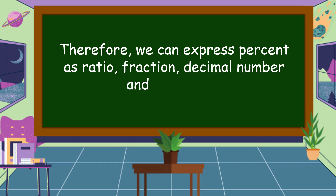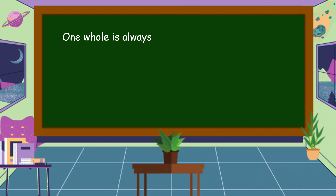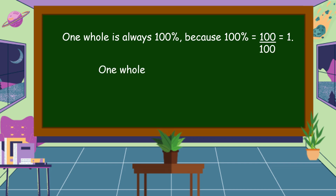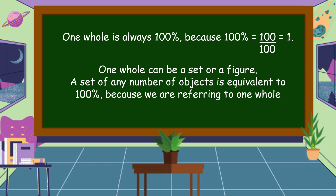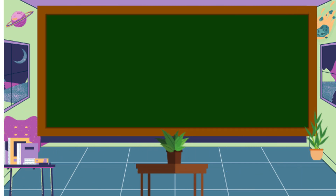One whole is always 100 percent, because 100 divided by 100 is equal to one. One whole can be a set or a figure. A set of any number of objects is equivalent to 100 percent because we are referring to one whole group.